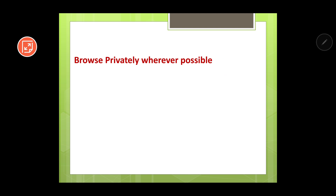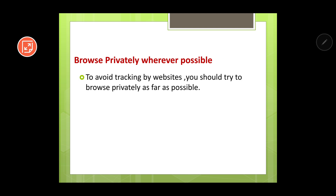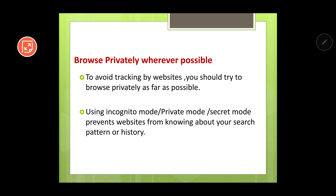Browse privately wherever possible. To avoid tracking by websites, you should try to browse privately as far as possible. I have talked about incognito mode, which is available in Google Chrome and in various other browsers by different names. You should try to browse through these secret, incognito, or private modes so that others cannot track you. Using incognito or private mode prevents websites from knowing about your search pattern or history. We should ensure that we give out the minimum amount of information to websites as far as possible.